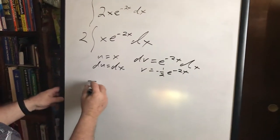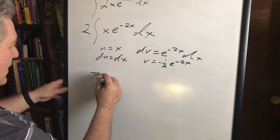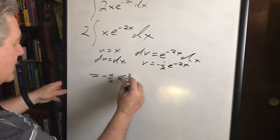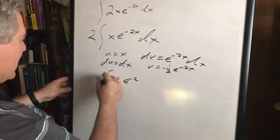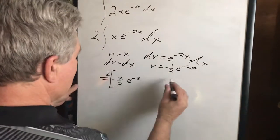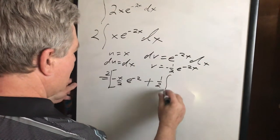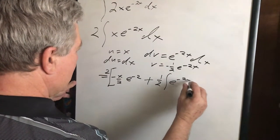This equals negative x over 2 times e to the negative 2x. Oh yeah, don't forget the 2 here, just multiply that 2 right there. And then you say minus minus which becomes plus one half integral of e to the negative 2x dx.